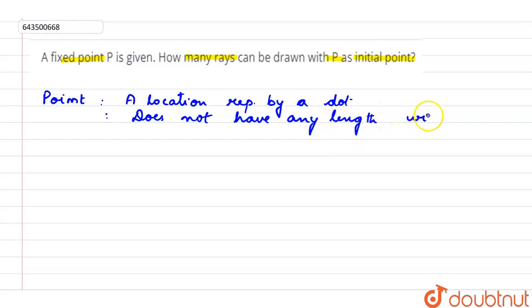Now, how is the point represented? This is called a point. From this point, there are n number of lines that can pass through this point. That means we cannot count how many lines can pass through any fixed point.